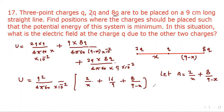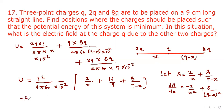To minimize this term we differentiate with respect to x: dA upon dx gives minus 2 upon x squared plus 8 upon (9 minus x) squared. Setting this equal to zero for minimum value, we get minus 2 upon x squared plus 8 upon (9 minus x) squared equals zero. Solving this gives x equal to 3 centimeters.